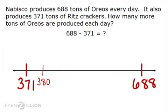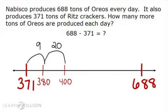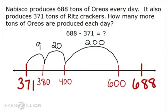371 plus 9 is 380. 380 plus 20 is 400. 400 plus 200 is 600. And 600 plus 88 is 688. And we're there.